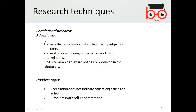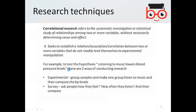Correlational research interprets the relationship between two entities. Its advantages include the ability to collect much information from many subjects at one time and to study a wide range of variables. Disadvantages include that correlation does not indicate causes and effects, and there can be problems with self-report methods. In simple terms, correlation is the relationship between two things: you do A and expect B.